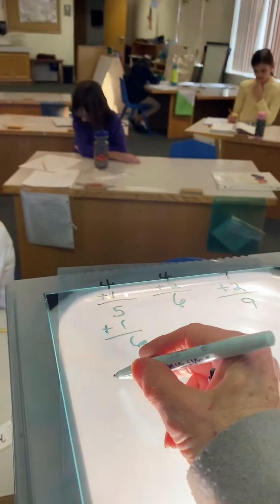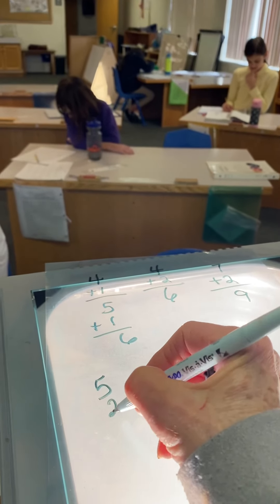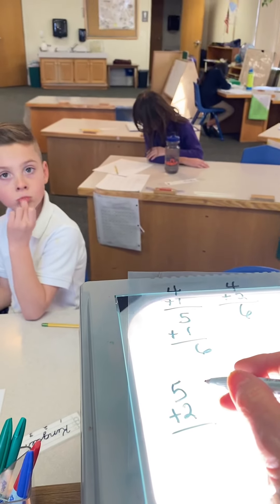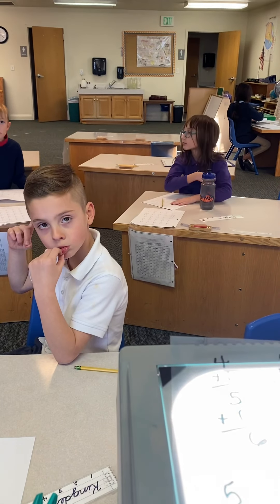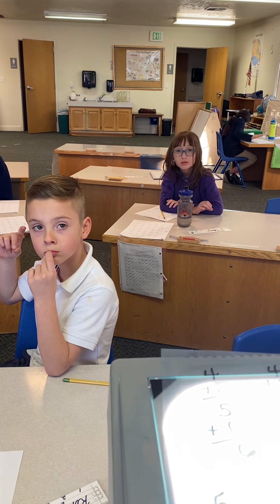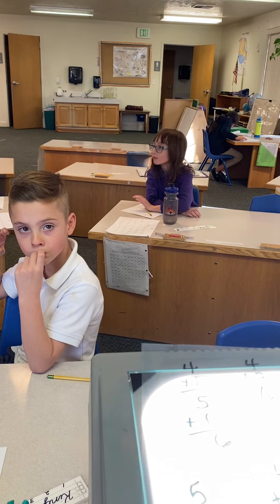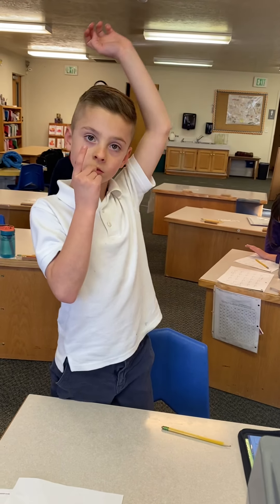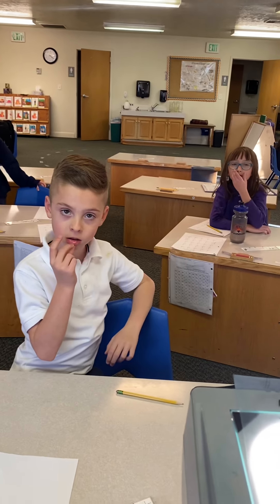It looks like we're struggling with one and one more. So we're going to think: anytime we see a two, we're going to think and one more. Five and one more is? Six. And one more is? Seven. Good. Four and one more is? Five. And one more is? Six. You just get to say it.